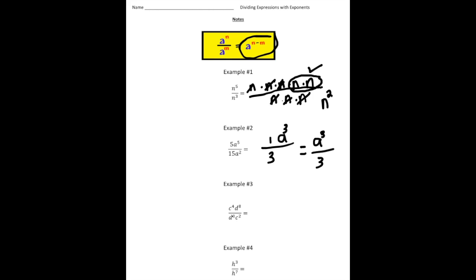Example number 3: we have c to the fourth times d to the eighth over d cubed times c squared. I'm first going to focus just on the c's — there's 4 on the top and 2 on the bottom, which means there's going to be c squared on top after we reduce. Then we have d to the eighth and d cubed, so it's going to be d to the fifth on top. The simplified expression is c squared d to the fifth over 1.